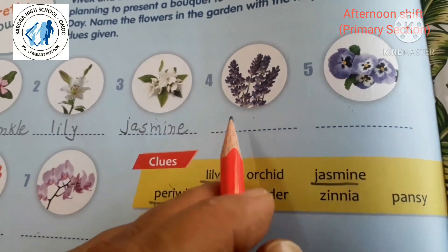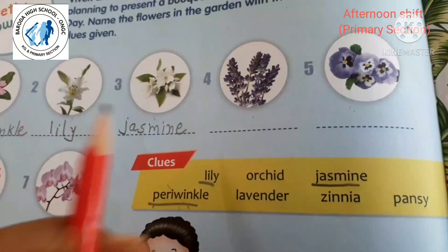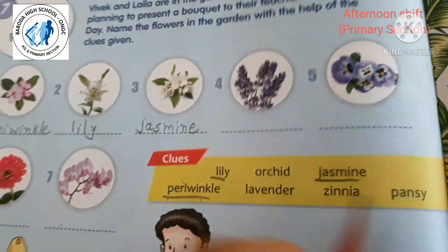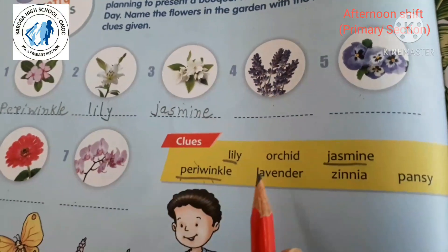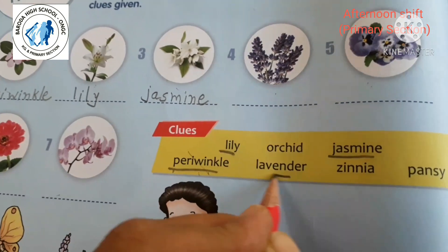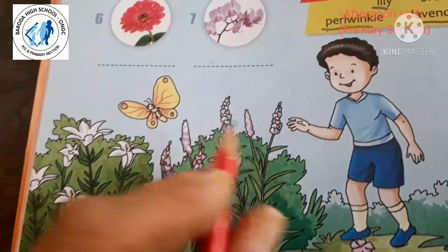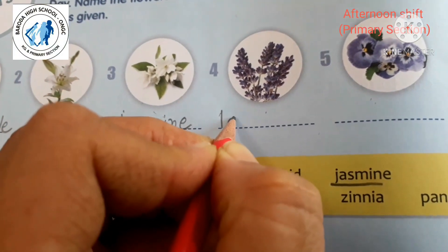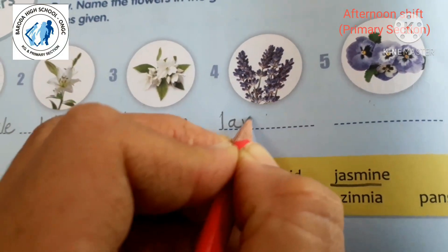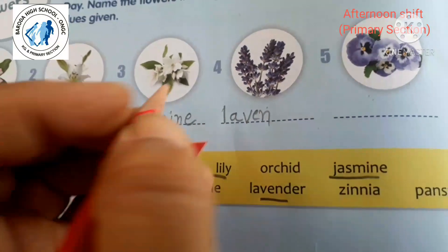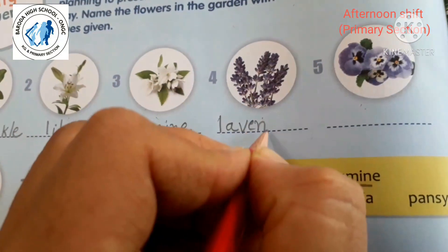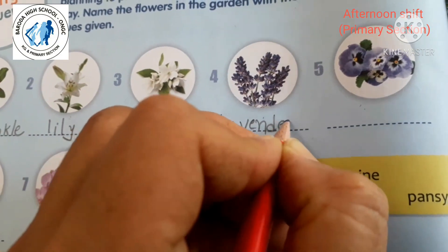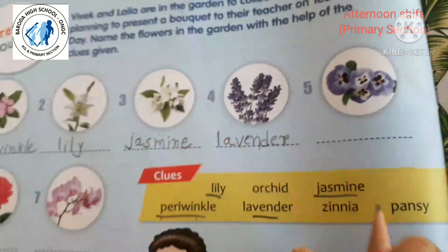Next — what is this? This is lavender. Where is lavender? Here and here — these are lavender. Let's write here: L-A-V-E-N-D-E-R — Lavender.